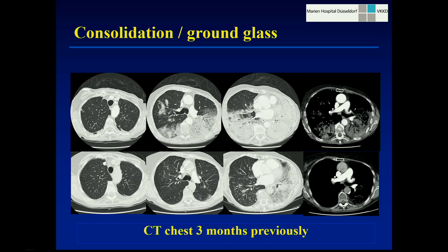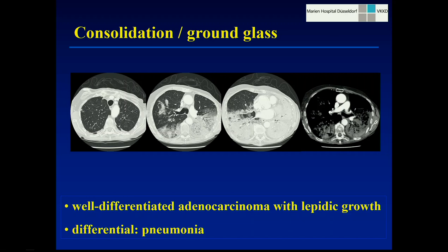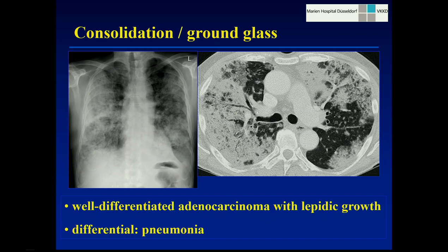Then we saw on the PACS system that we had a previous study of that lady from three months previously. All these findings had obviously progressed over three months — there were a lot of centrilobular nodules which later coalesced to form dense consolidation, and the extent of the consolidation had spread. This would be very unusual for pneumonia. The patient received a biopsy and turned out to have well-differentiated adenocarcinoma with lepidic growth — the type of non-small cell lung cancer that really grows like pneumonia, which is why the differential diagnosis is usually pneumonia. These patients are often treated for pneumonia and only when there is no resolution with antibiotic therapy do they obtain a biopsy.